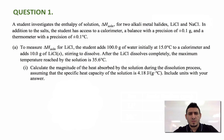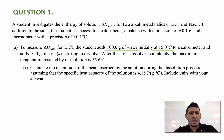In addition to the salts, the student has access to a calorimeter, a balance with a precision of plus or minus 0.1 gram, and a thermometer with a precision of plus or minus 0.1 degree Celsius. To measure delta H solution for lithium chloride, the student adds 100 grams of water initially at 15.0 degrees Celsius to a calorimeter, and adds 10.0 grams of lithium chloride solid, stirring to dissolve. After the lithium chloride dissolves completely, the maximum temperature reached by the solution is 35.6 degrees Celsius.